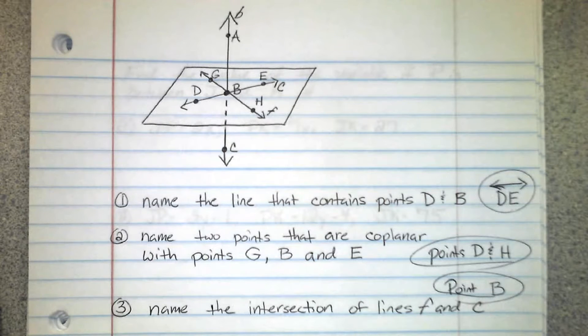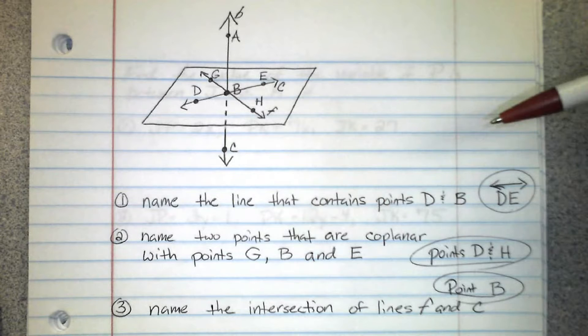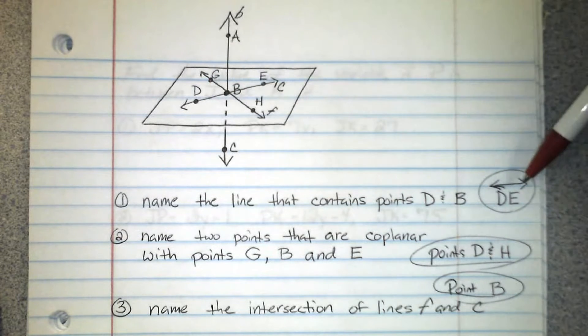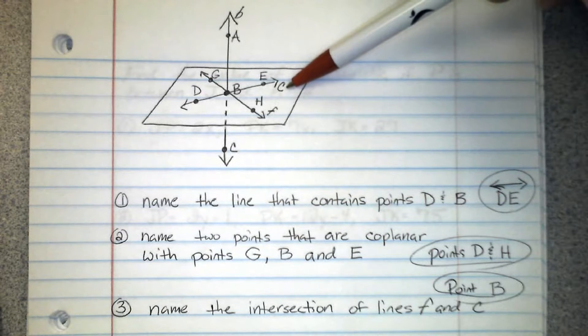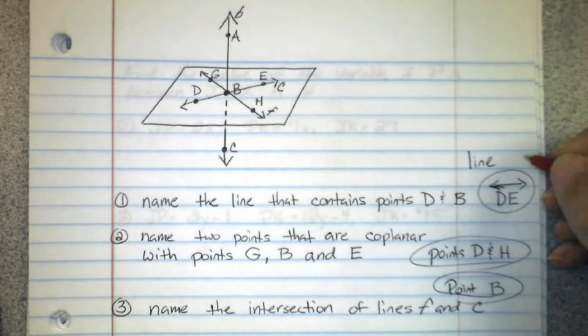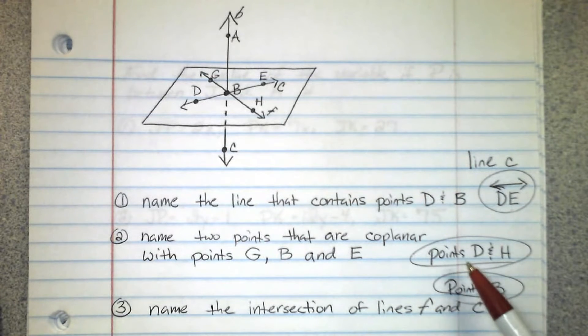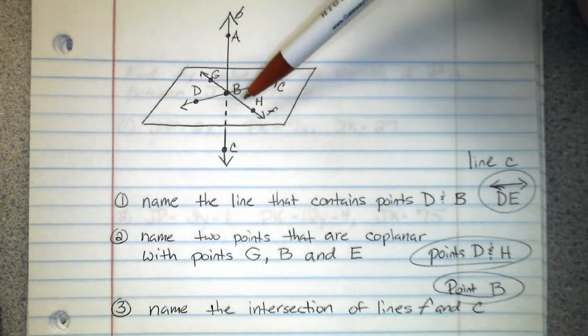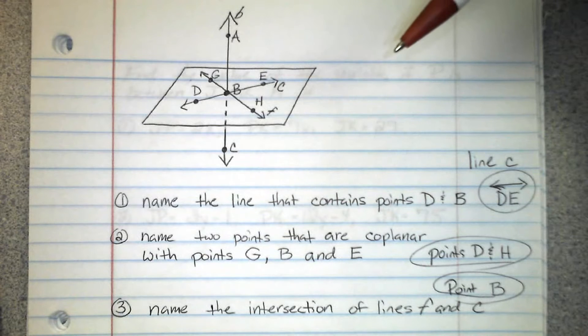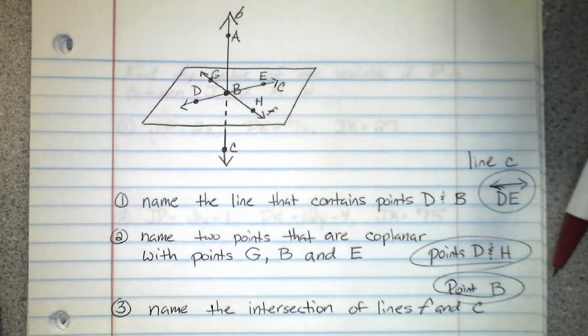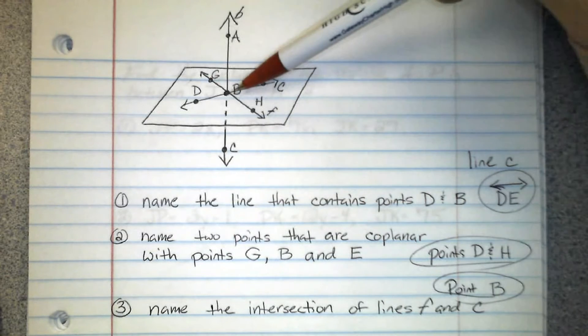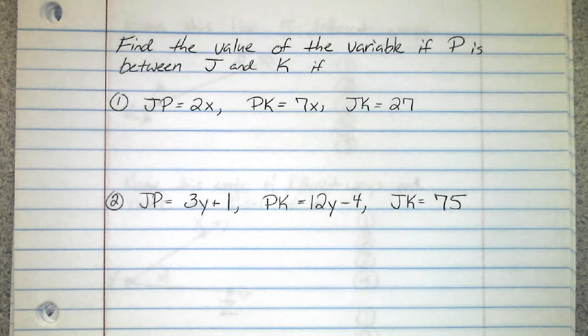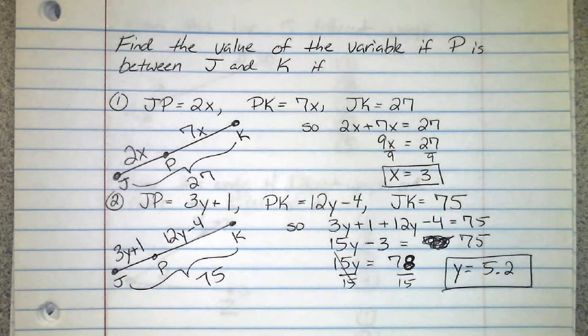So name the line that contains points D and B. Well there's point D and B, and those points are on this line. We can name it as line DE, don't forget the line with the arrow. Also remember you can use the lowercase script letter, so we could call this line C. Next, name two points that are coplanar with points G, B and E. Well there's G, B and E, they're all on this plane right here, so we would say points D and H. Next, name the intersection of lines F and C. Well there's F, there's C, and they intersect at point B.